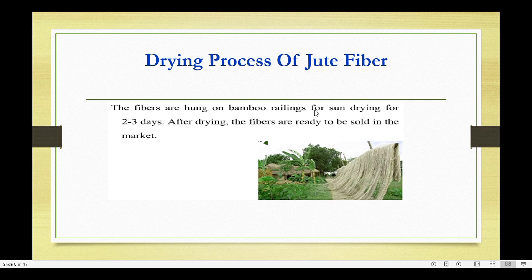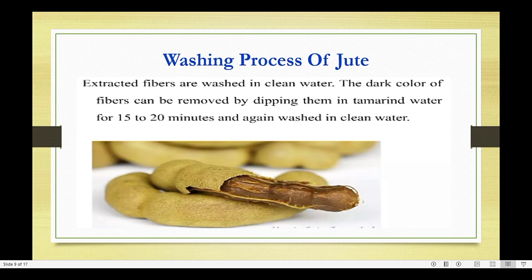The fibers are hung on bamboo railings for sun drying — a natural drying source — for two to three days. After drying, the fibers are ready to be sold in the market. Next is the washing process: extracted fibers are washed in clean water. The dark color of the fibers can be removed by dipping them in treatment water for 15 to 20 minutes, then washing again in clean water.